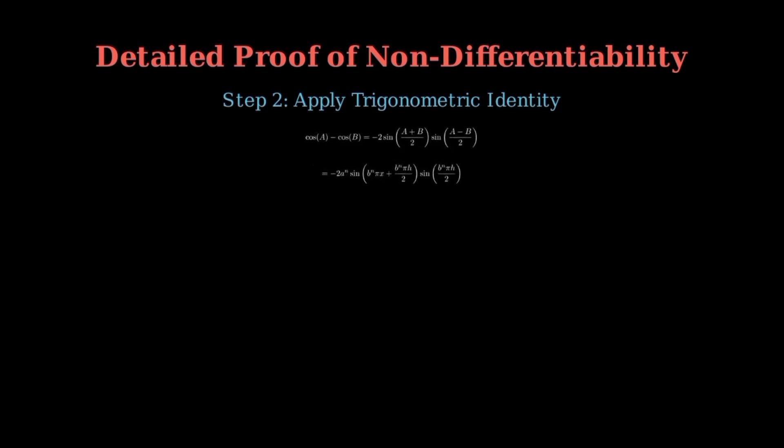Using the trigonometric identity for the difference of cosines, this becomes negative 2a to the n times sine of b to the n times pi x plus b to the n times pi h over 2 times sine of b to the n times pi h over 2, all divided by h.